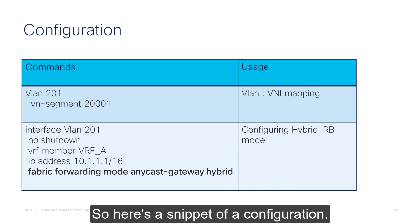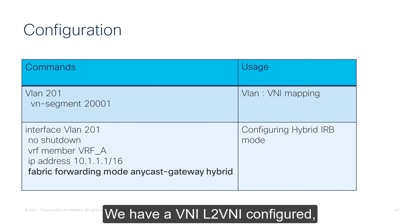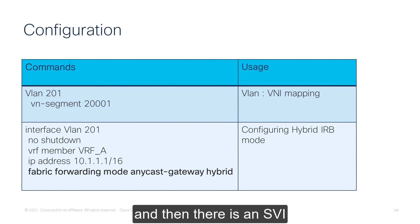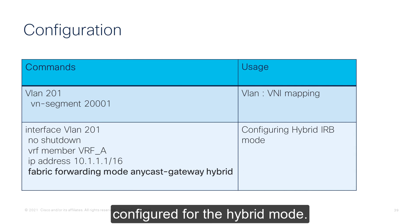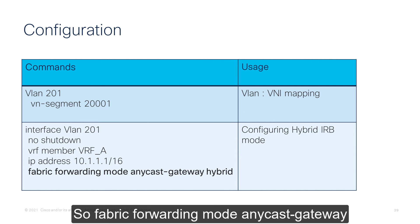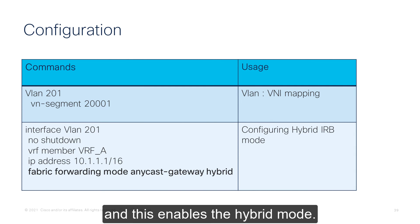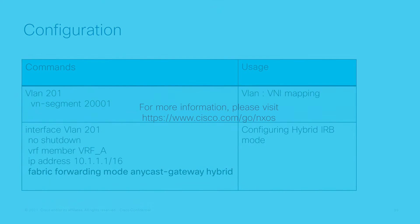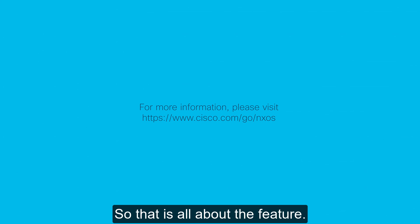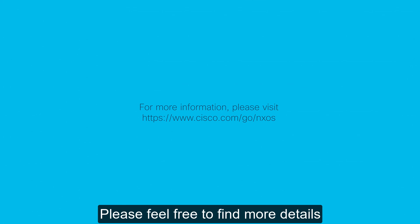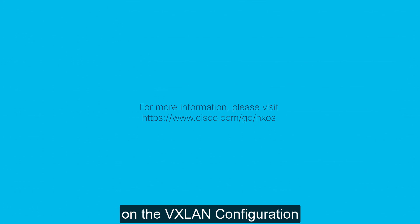Here is a snippet of a configuration. We have an L2VNI configured, and then there is an SVI configured for the hybrid mode with fabric forwarding mode anycast-gateway. The hybrid mode is used along with this, and this enables the hybrid mode. Please feel free to find more details in the VXLAN configuration guide for the release. Thank you.